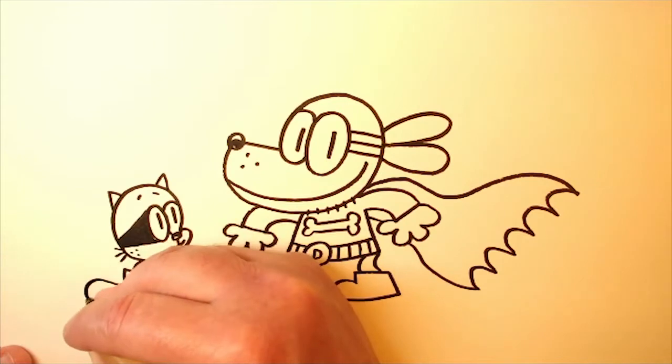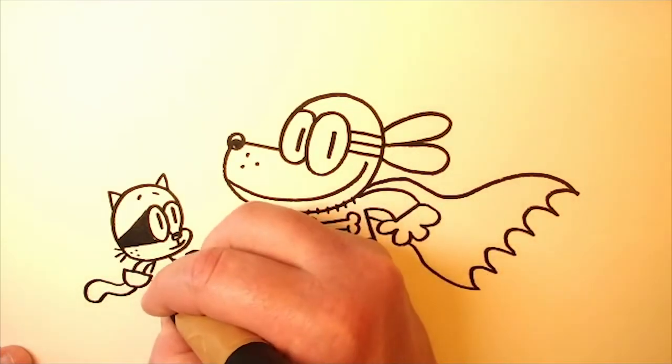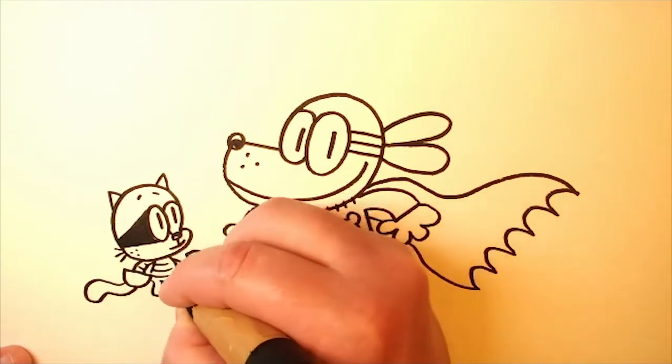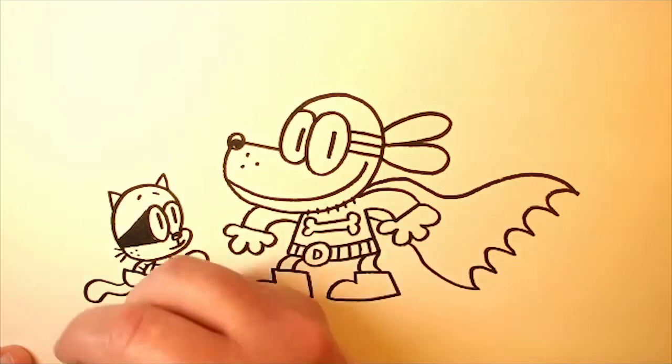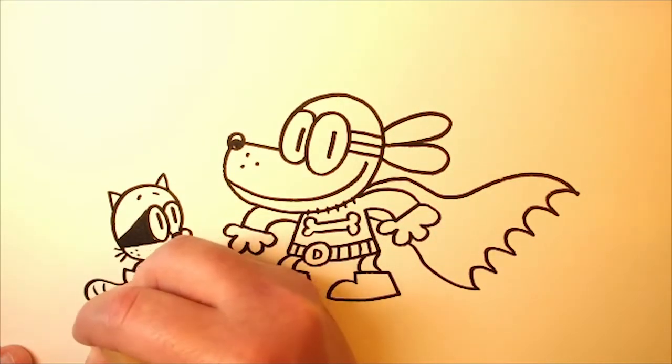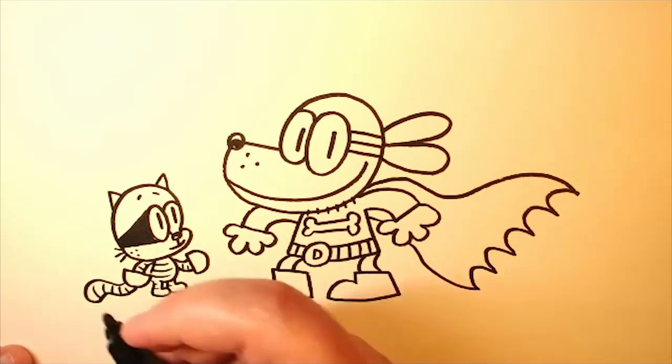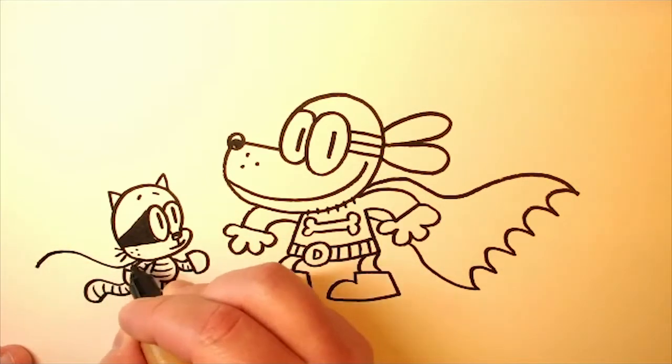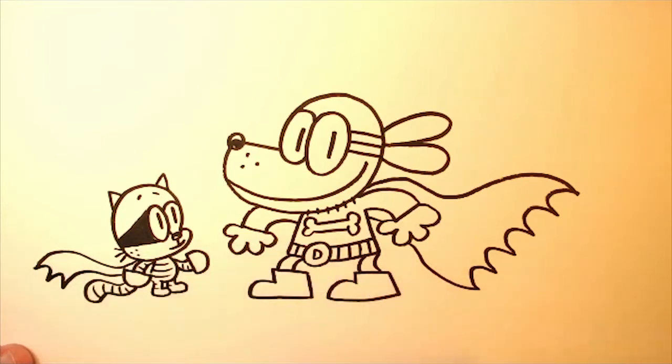Got his tail there. And then we just add the stripes. And Little Petey's cape is a lot just like Dogman's, except it's smaller and it only has two U's at the bottom.